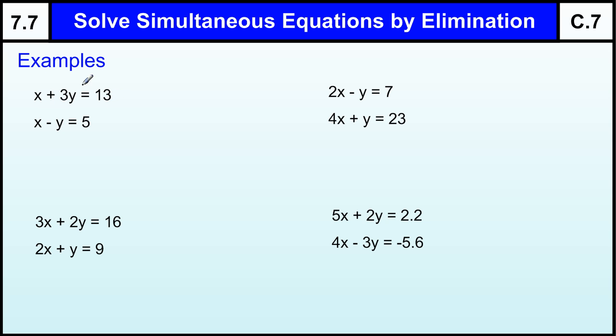First of all, you need the letters that you are trying to solve on the left hand side. The idea is to try and eliminate one of the letters by adding or subtracting the two equations until something disappears. Now this first equation, I have one lot of X and one lot of X. So if I subtract those two equations, I do X minus X, which is nothing.